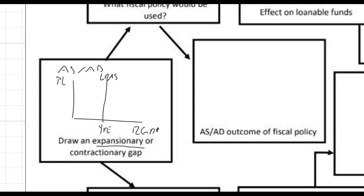What that means is our current output exceeds our potential output. The LRAS is going to be the potential real GDP — that will be at full employment, natural unemployment, all that. If we have an expansionary gap or inflationary gap, our actual output, which is where ASAD intersects, is going to be larger than our potential. So this will be a positive GDP gap. Here we have our current price level and current output, because our current output is greater than our potential where the LRAS is. We call that an expansionary gap.